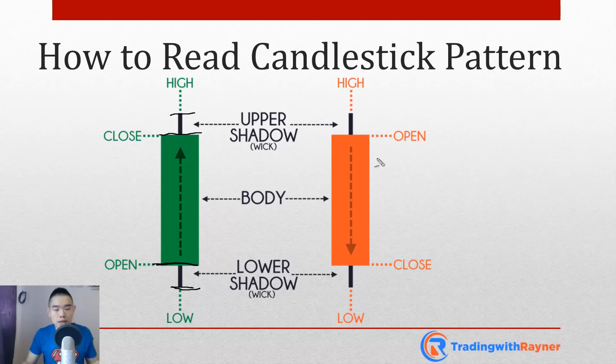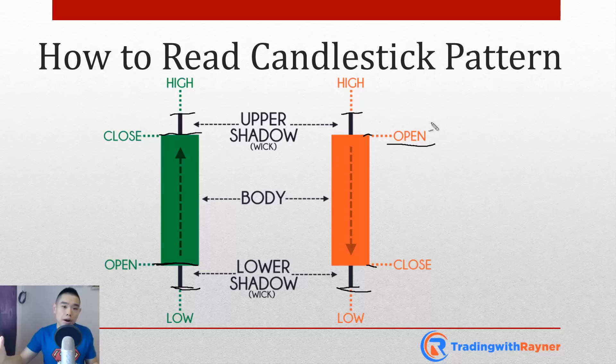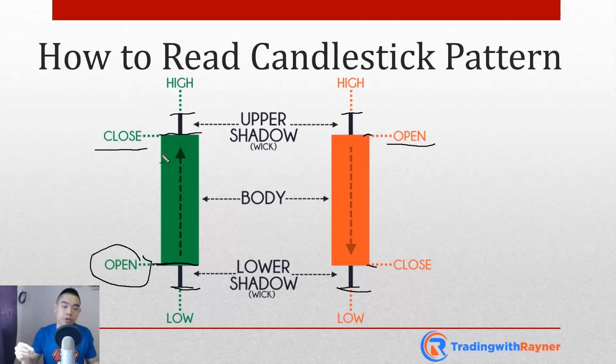For a red, or bearish, bar the open and close are on the opposite side. The open is on top and the close is at the bottom. The lows and highs of the session are similarly represented by wicks. For a bullish bar, the price closed higher — the open is always below the close. For a bearish bar, the price closed lower and the open has to be above the close.